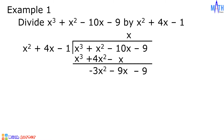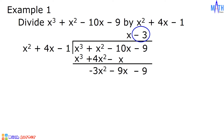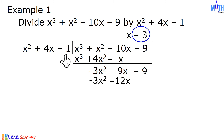Let us repeat the process. Let us divide negative 3x squared by the first term of the divisor. Negative 3x squared divided by x squared is equal to negative 3. Next, let us multiply negative 3 by x squared plus 4x minus 1. Negative 3 times x squared is equal to negative 3x squared. Negative 3 times 4x equals negative 12x. Negative 3 times negative 1 equals positive 3.